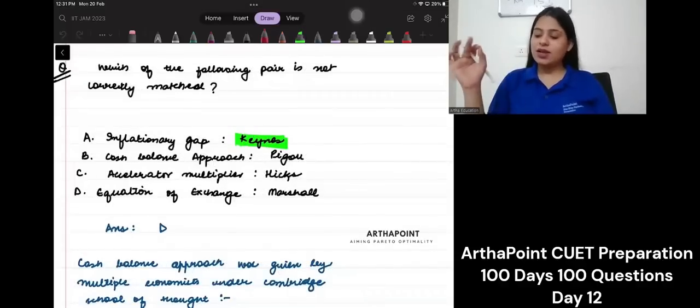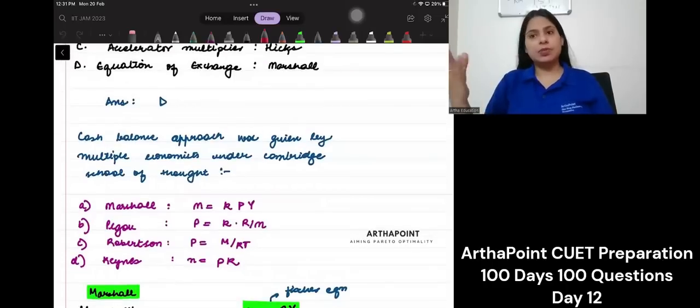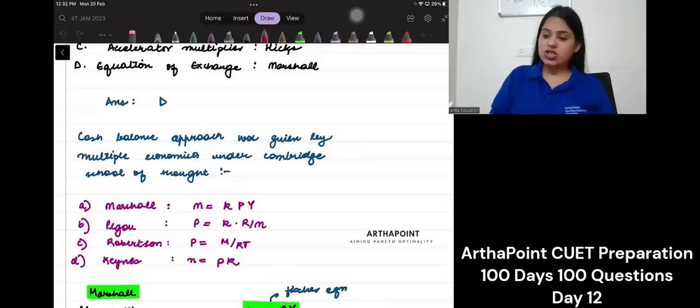Now, let's go to the second one. Cash balance approach. Cash balance approach was actually given by multiple economists under the Cambridge school of thought. It was Marshall who gave his cash balance approach like M is equal to K P Y.